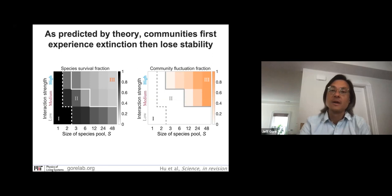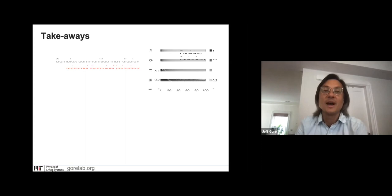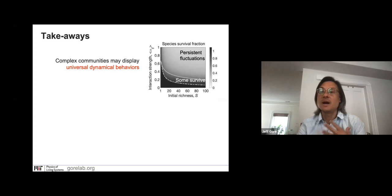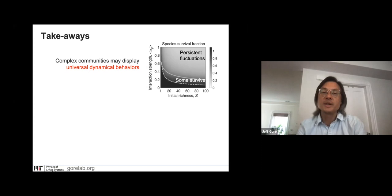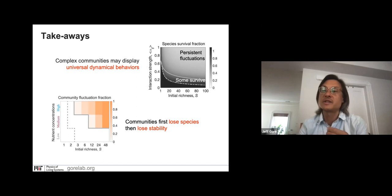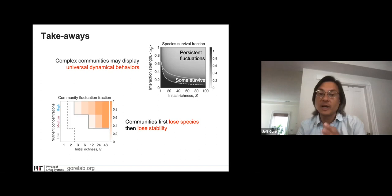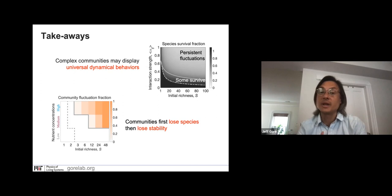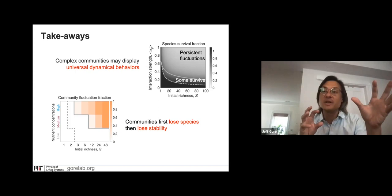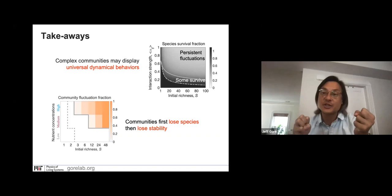We're really excited about this idea that these complex communities may nonetheless display universal dynamical behaviors that can be summarized in the form of a phase diagram. In particular, what we've demonstrated is that these communities first lose species — there's first species extinction — and then only later is there loss of stability and the onset of fluctuations. We are now following up on this work in many different ways: there's a predicted glassy phase that we are now exploring with some preliminary data, and we are also exploring the dynamics within a metacommunity — where instead of dispersal from an outside world, you have dispersal between different patches — and we've demonstrated that this can also sustain diversity through migration among patches.